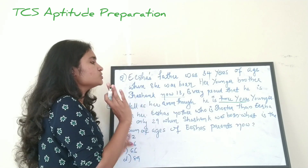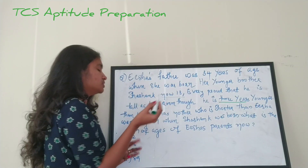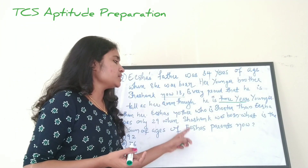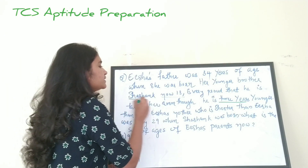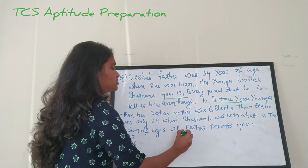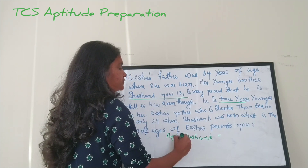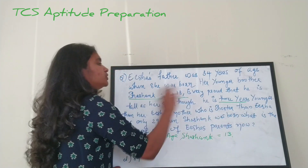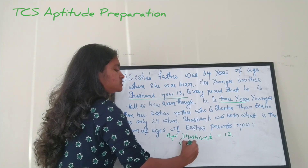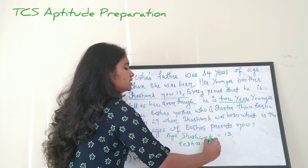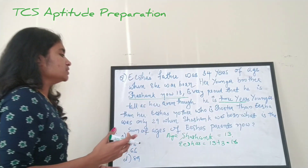We need to first find out the ages of Isha and Shashank, then find the ages of Isha's parents. From the question, it is directly given that Shashank is now 13, so Shashank's age is 13. It is also given that he is three years younger than Isha, so Isha's age is 13 plus 3, which equals 16 years.